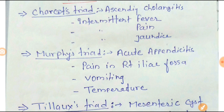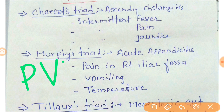Next one is Murphy's Triad, found in acute appendicitis. Here the triad is pain in the right iliac fossa, vomiting, and tenderness. You can easily remember it by the trick PBT — Pain, then Vomiting, then Temperature. Murphy's Triad is most important.